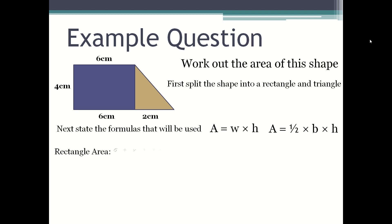The rectangle area: six times four which is twenty-four centimeters squared. Triangle area: a half times two times four which is four centimeters squared. Then you add all the areas together.